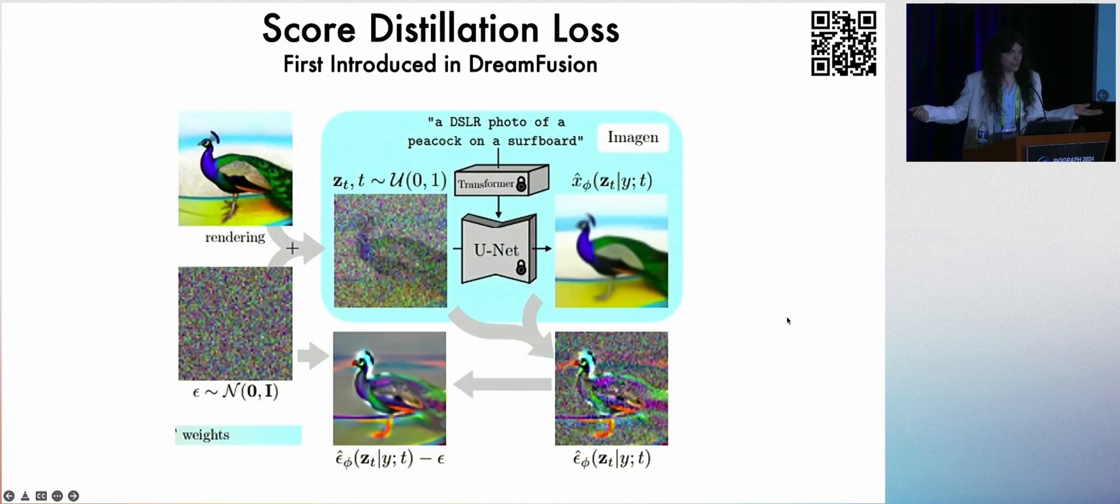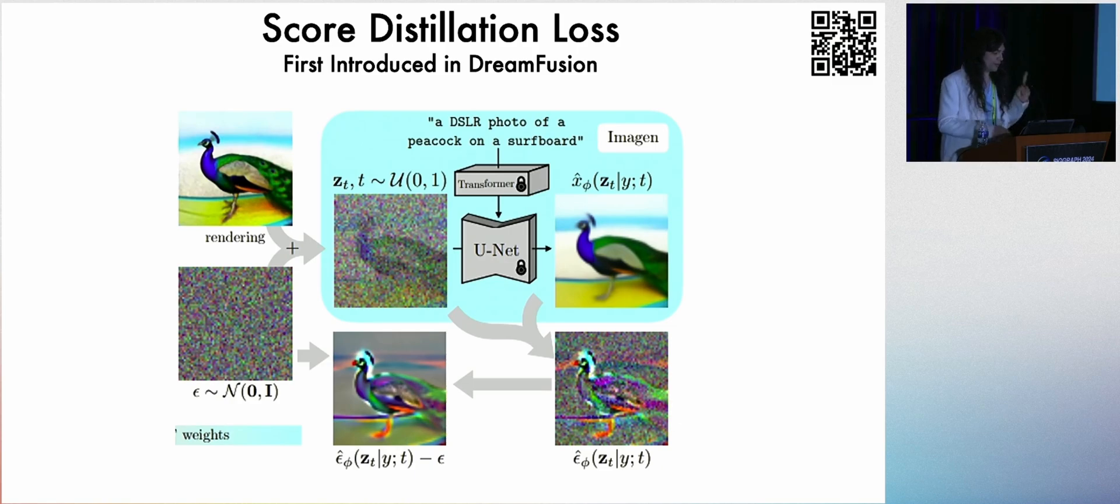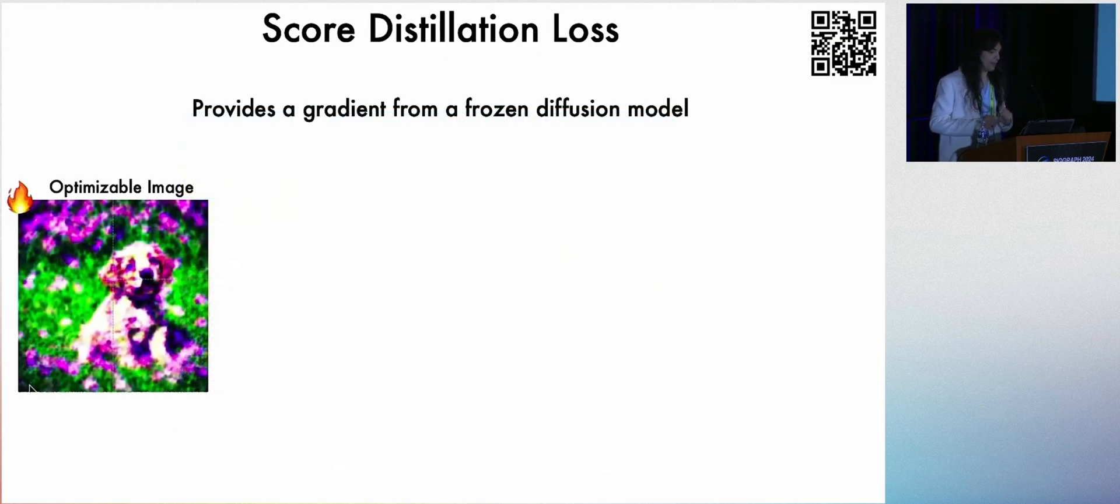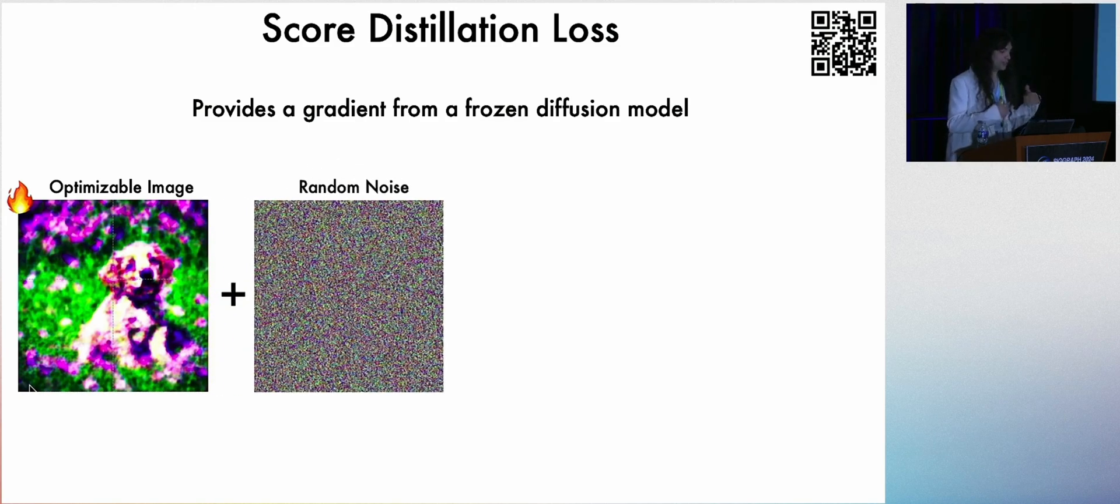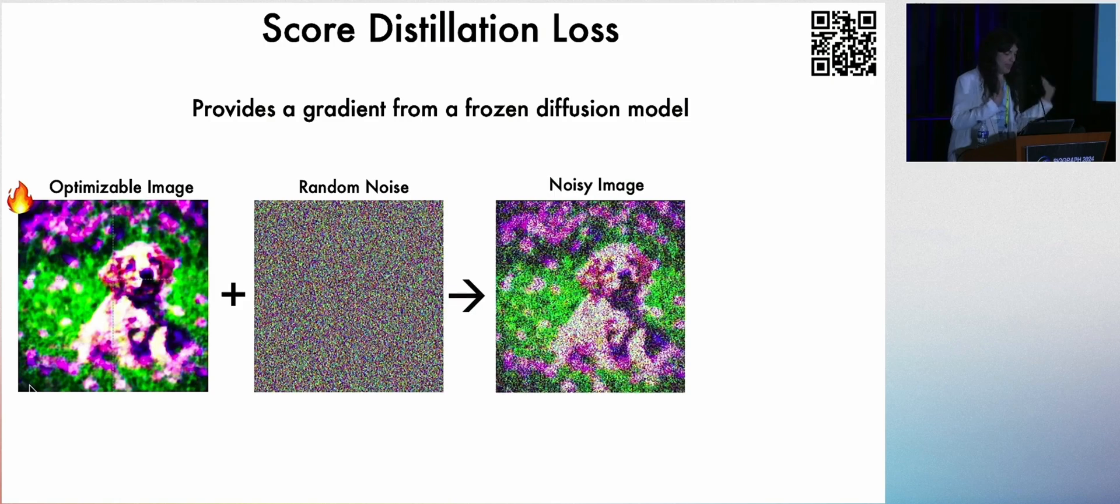So to do this, the first step was score distillation loss. You may be familiar with this because it was first introduced in dream fusion, but we're not making 3D models here. We're optimizing images. So we might take some image. This is how score distillation loss works. We take an image, and we add some random noise to it, and then we have a noisy image.